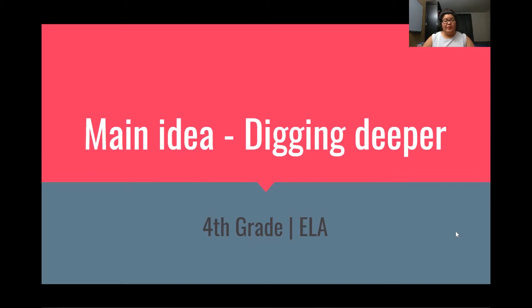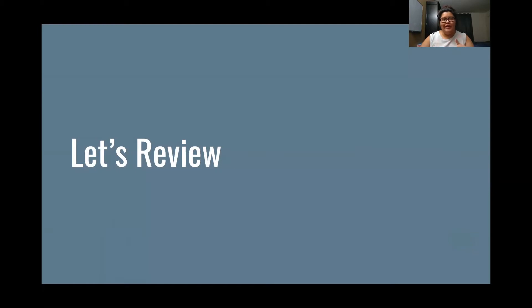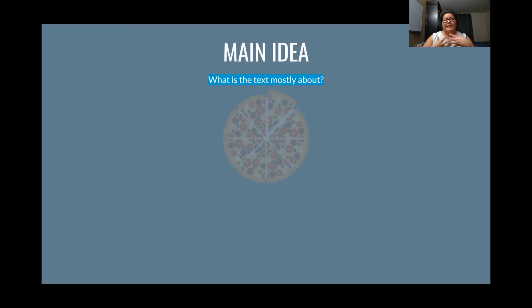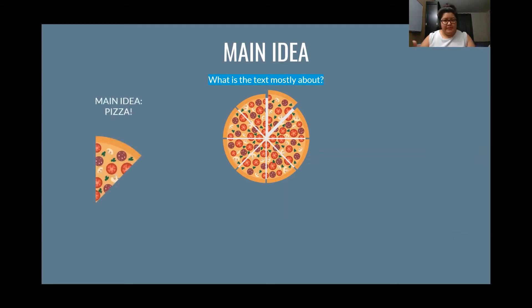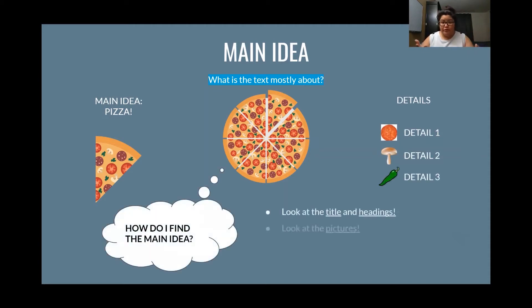We're going to continue on with main idea, but today we're going to try something a little different and dig a little deeper in our knowledge. So let's review main idea. Main idea is: what is the text mostly about? If you look at this image and think of it as your text, the main idea is a pizza, and what got us there are the details — the pepperonis, the mushrooms, and the peppers.